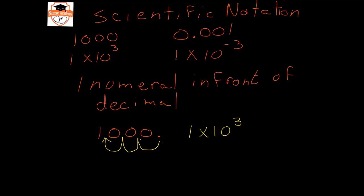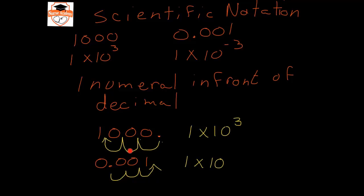Likewise, if I'm going to write 1 times 10 to the negative 3 in normal notation, I'm going to count how many times I have to move the decimal to get the 1 — the first non-zero number — in front of the decimal. That would be 1, 2, 3. And because this is a smaller number than 1 and we're moving the decimal to the right, this one is going to have a negative exponent.